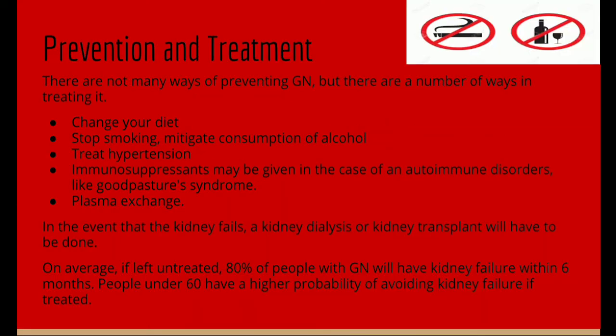Prevention and treatment of GN: there are not many ways to prevent GN, but there are a number of ways to treat it — a change of diet, stopping smoking, mitigating consumption of alcohol, and treating hypertension. Immunosuppressants may be given in the case of autoimmune disorders like Goodpasture syndrome, along with plasma exchange. In the event that the kidney fails, kidney dialysis or a kidney transplant will have to be done. On average, if left untreated, 80% of people with GN will have kidney failure within 6 months. People under 60 have a higher probability of avoiding kidney failure if it is treated.